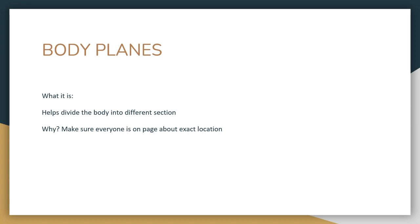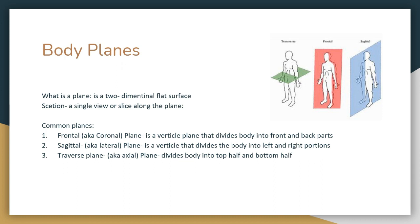Next we go on to body planes. A body plane helps divide the body into different sections so everyone is on the same page about the exact location. A plane is a two-dimensional flat surface; a section is a single view or slice along the plane. There are three common planes: the frontal (also called coronal) plane — a vertical plane dividing the body into front and back; the sagittal (lateral) plane — a vertical plane dividing the body left to right; and the transverse (axial) plane — dividing the body top and bottom. This is great for radiology and imaging.